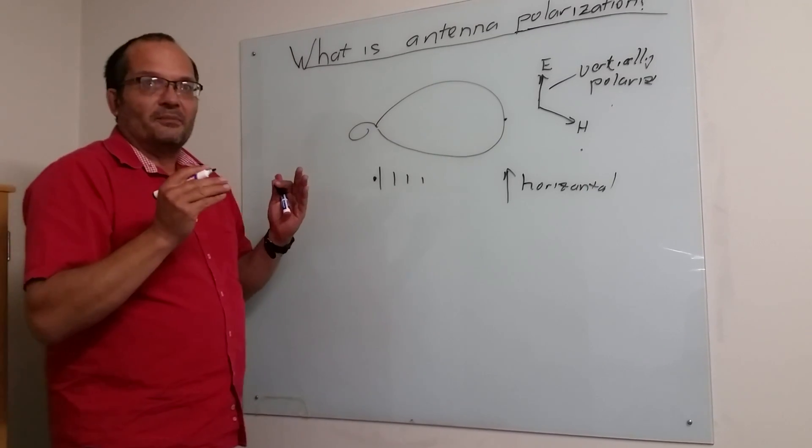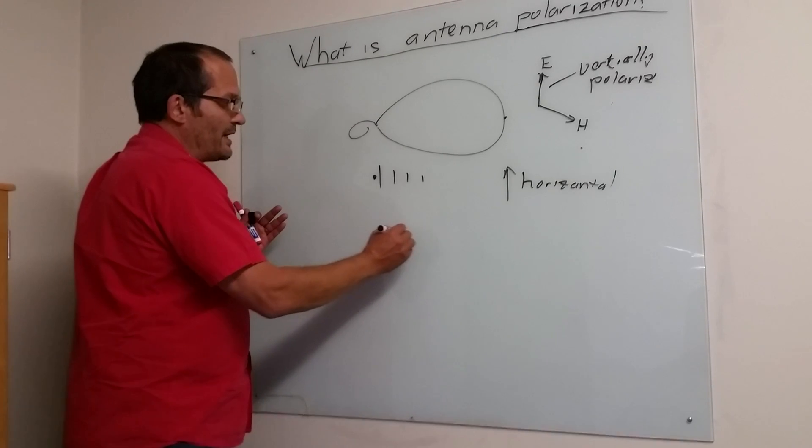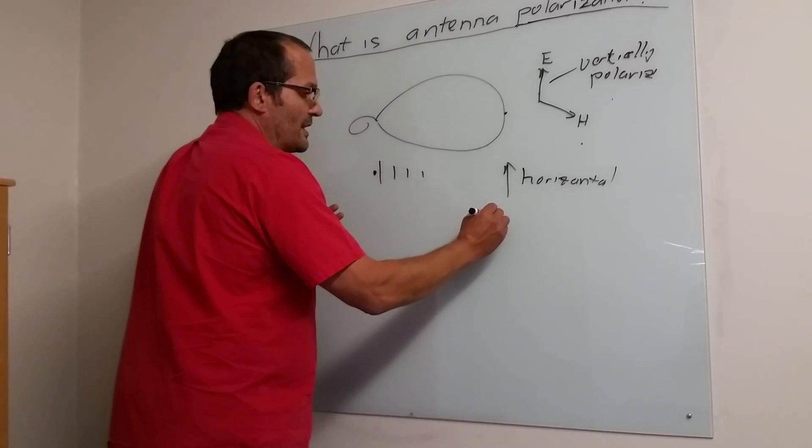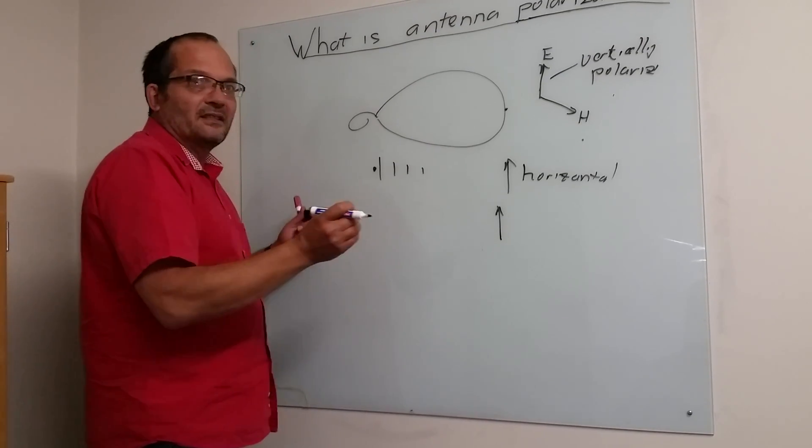For MIMO, for example, even like our X-Port 2, we've got inside it two antennas. One will have one sense of polarization, and another one, that's why we've got two cables, will have another sense of polarization.